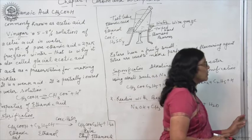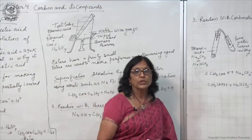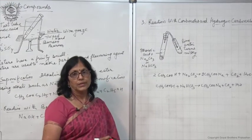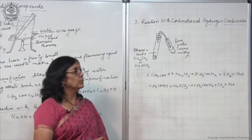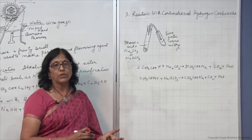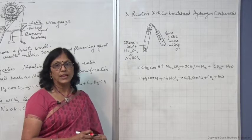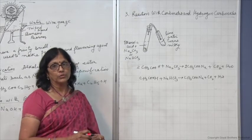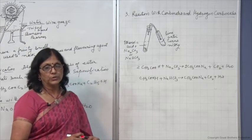The third property is the reaction of the acid with sodium carbonate and sodium hydrogen carbonate or any carbonates or hydrogen carbonates. You have already studied that acids on reacting with carbonates and hydrogen carbonates liberate carbon dioxide gas. In the same manner, ethanoic acid also liberates carbon dioxide gas with carbonates and hydrogen carbonates.